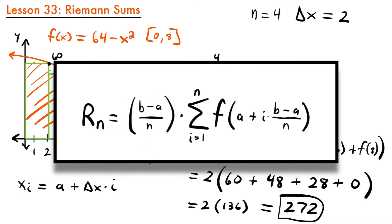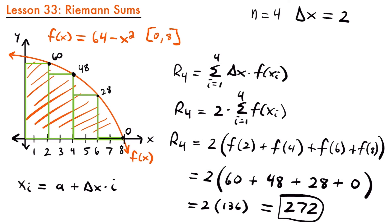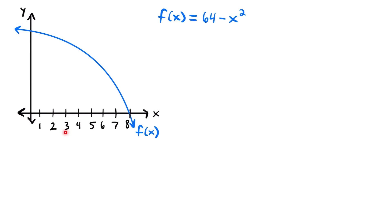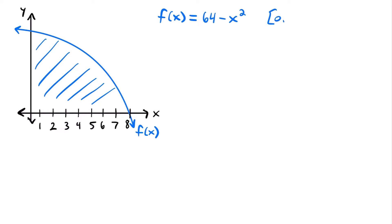Now let's look at how we would calculate the area if we used left endpoints instead of right endpoints. Here we have the same function f(x) = 64 minus x squared and the same graph. We still want to find the area under this curve from 0 to 8, and we're still going to use four rectangles, so n equals 4.